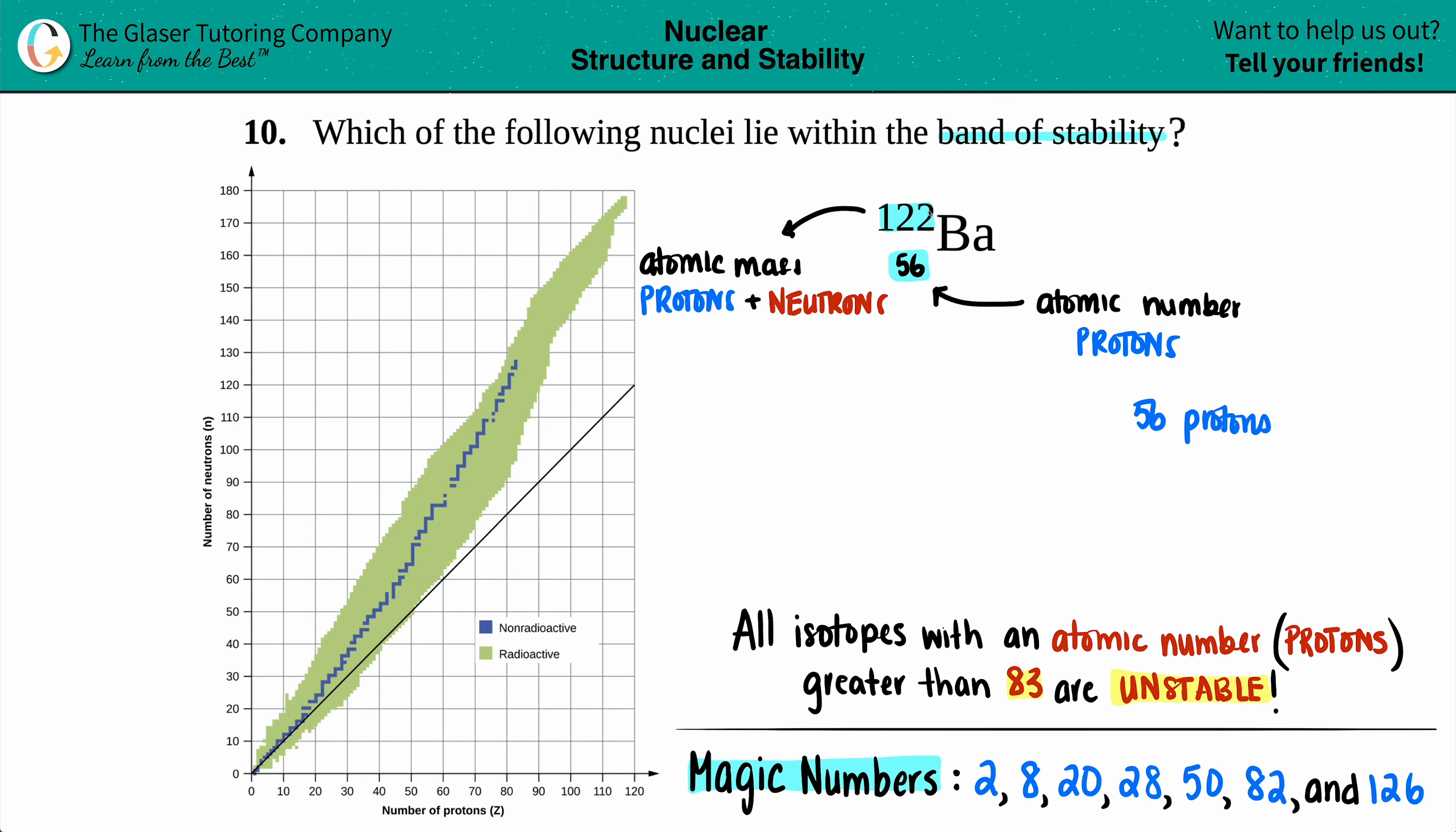Now let's find out how many neutrons we have. If our atomic mass is protons and neutrons, and the atomic number is the protons, what can I do to these two numbers to just get out my neutrons? Yeah, you got it. We just got to subtract.